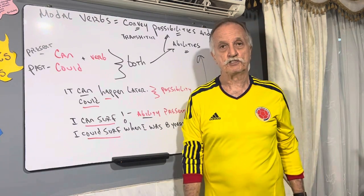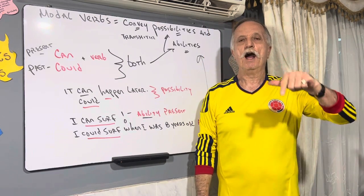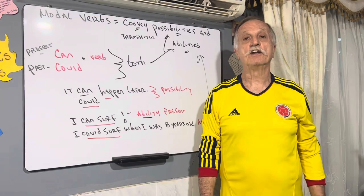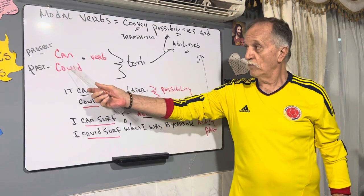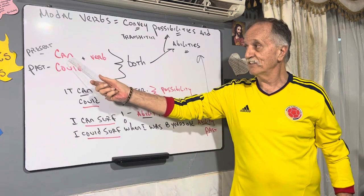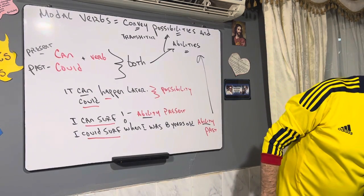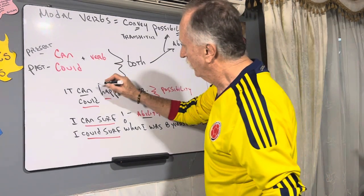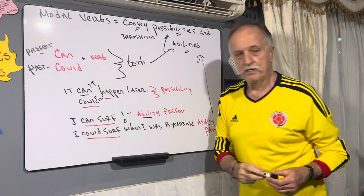Modal verbs — can and could — two things: ability and possibility. Anything could happen in life; you must be prepared. Modal verbs take a base verb, always. Can't, couldn't — negativo. Let's remember our negatives always: can't and couldn't. I can't, I couldn't. Negatives.